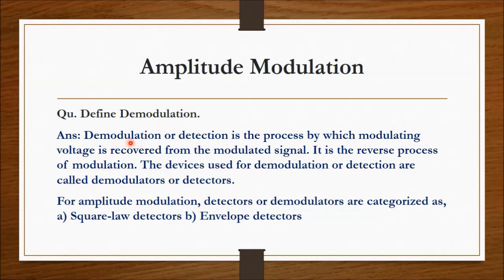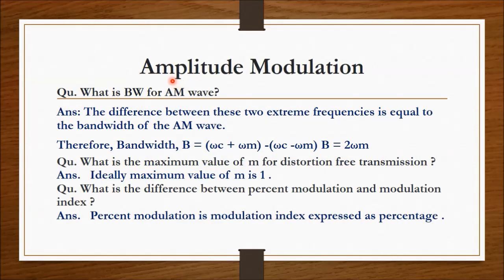The next question is: define demodulation. Demodulation or detection is the process by which the modulating voltage is recovered from the modulated signal. It is the reverse process of modulation. The devices used for demodulation are called demodulators or detectors. For amplitude modulation, detectors are categorized as square law detector and envelope detector, with the envelope detector being most commonly used.